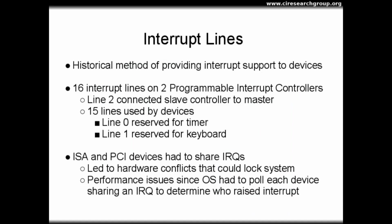These interrupt lines on the motherboard were actually circuit traces — conductive paths etched into the motherboard that allowed interrupts to be received from devices. There were 15 lines available, of the 16, that could be used by devices, with lines 0 and 1 reserved for the timer and a PS2 keyboard, respectively — or even before the PS2 reservation, the original AT keyboard. ISA and PCI add-in devices actually had to share interrupt request lines, and this sharing could lead to hardware conflicts that could lock up the system. It was thus up to the system owner to manage the sharing by setting little jumpers on the add-in cards so that the cards were using different IRQ lines.